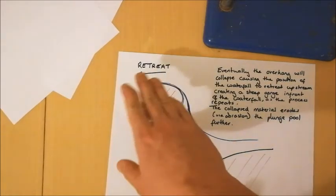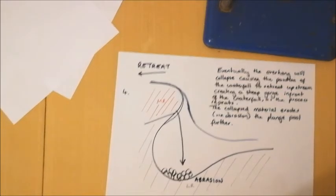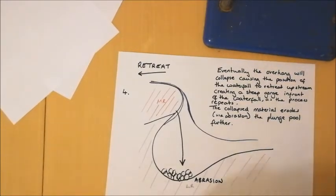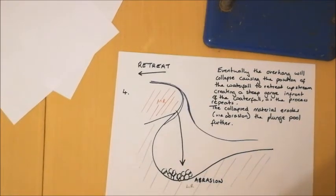We've also got to remember that collapsed material from the overhang is going to be sitting in the bottom of the plunge pool. As it sits there, it's going to be moved around by the force of the water hitting it. The plunge pool is going to be made deeper via processes of erosion such as abrasion, as that collapsed material is moved backwards and forwards by the force of the water. That's going to increase the rate of erosion, increasing the depth of the plunge pool and also increasing the rate at which undercutting occurs, and therefore the rate at which the waterfall retreats.